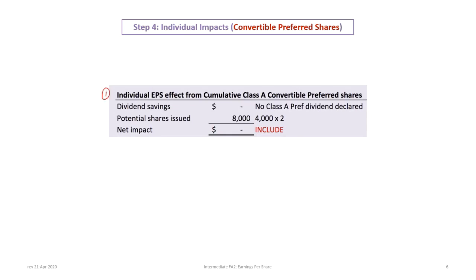Step four is to determine the individual impacts of each potentially dilutive element. It doesn't matter what order you start with — all must be captured, since the ranking comes in the next step. We'll start with the Class A non-cumulative convertible preferred shares. To determine the individual impact, we look at the savings or earnings impact and the share impact. Since this is non-cumulative and no dividend was declared, there is no earnings impact.